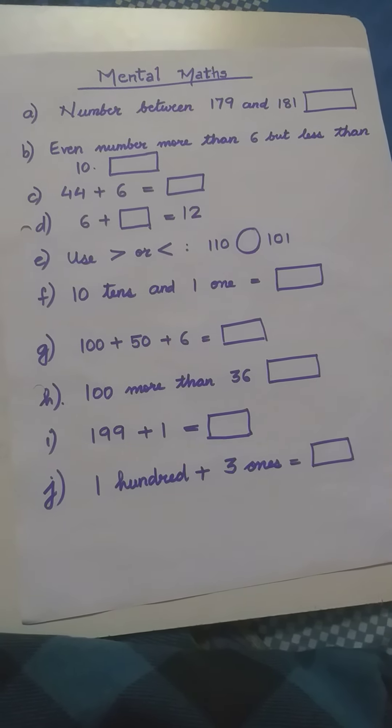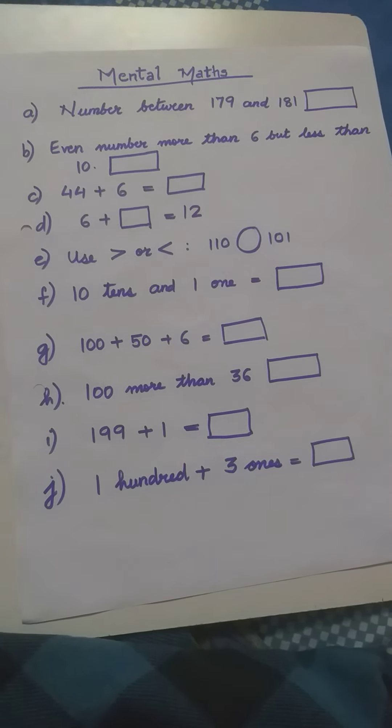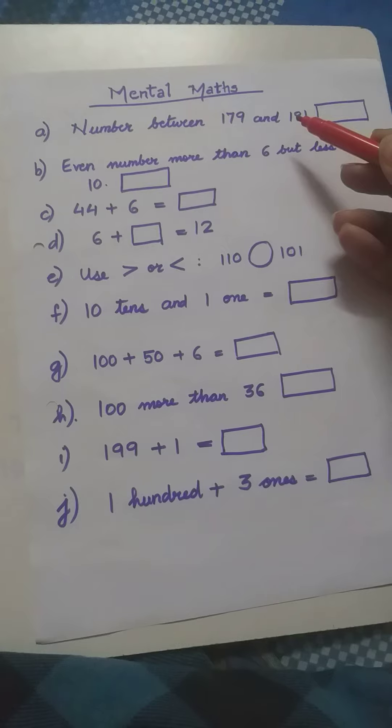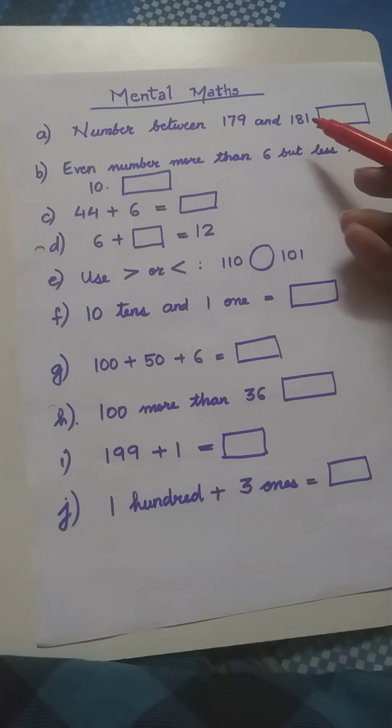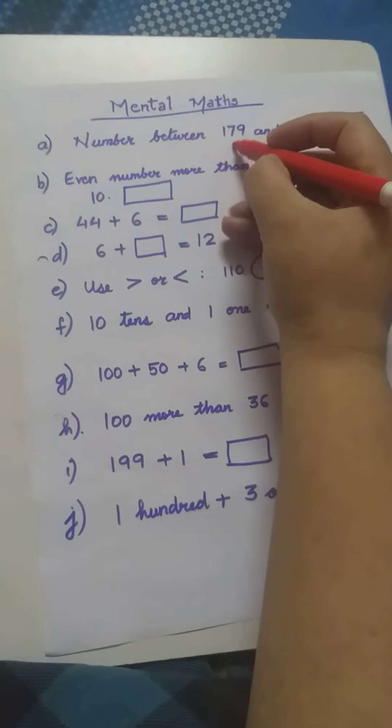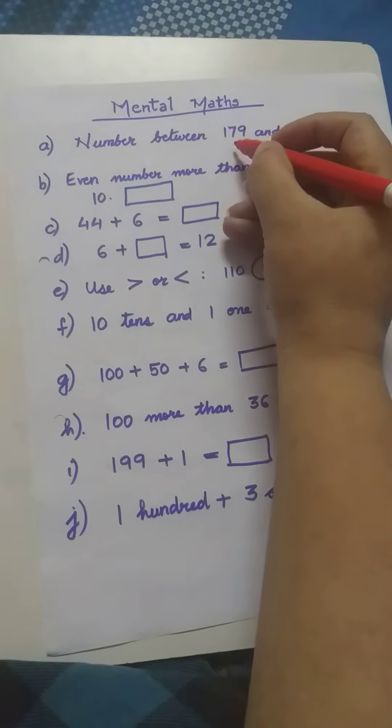Let's start. Our first question is: the number between 179 and 181. You all know counting from 101 to 200. We will write 179. What comes after 179? 180, 181. So, which number is coming between 179 and 181? Yes, 180.